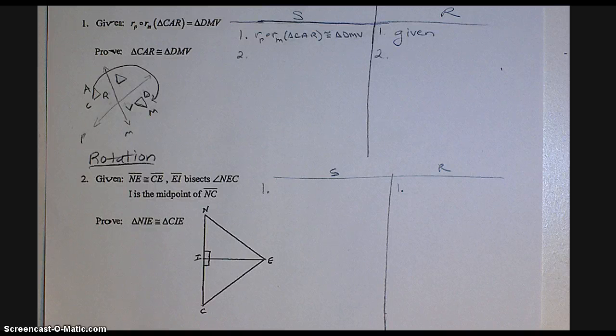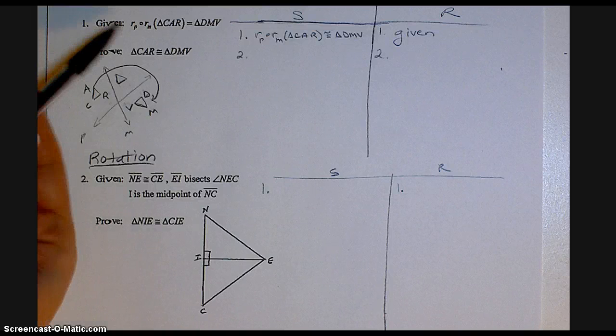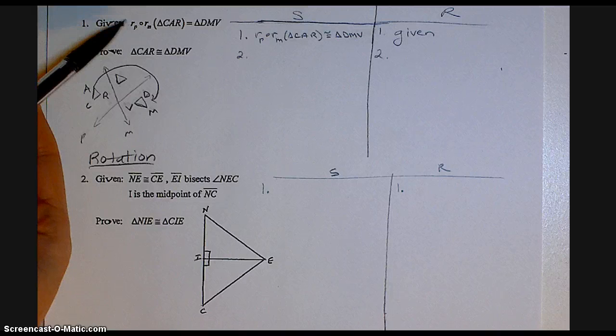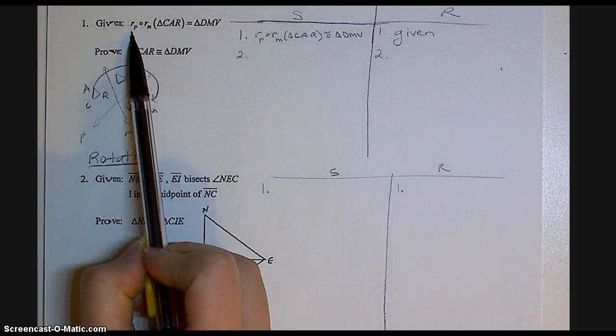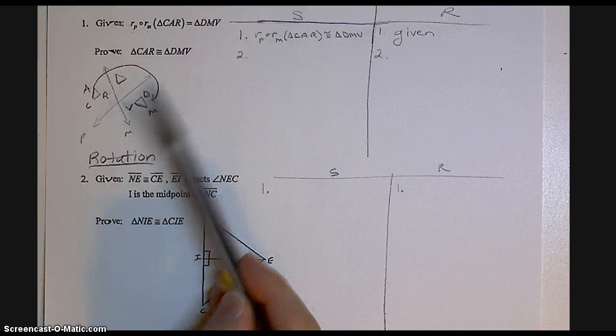Okay, so first of all, when you read a question like number one, you should recognize this notation because this is a composition of reflections. And something to notice about this one, it does not tell us that these lines M and P are parallel, so we assume that they're intersecting.